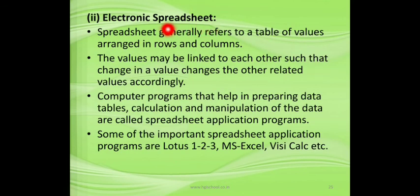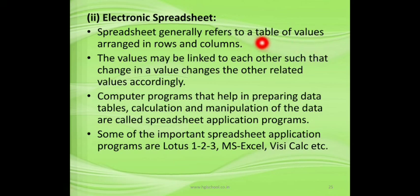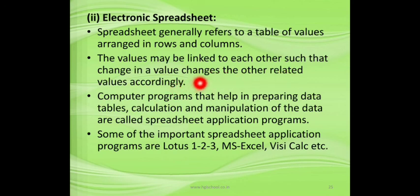The second type of general purpose application software is the electronic spreadsheet. A spreadsheet generally refers to a table of values arranged in rows and columns in a structured manner. The values may be linked to each other such that a change in one value automatically changes other related values accordingly.